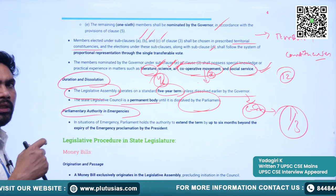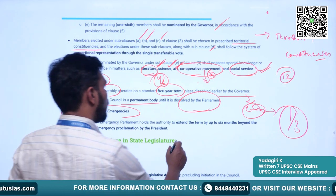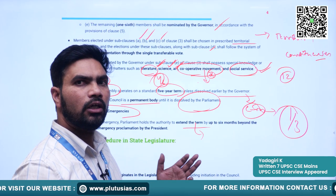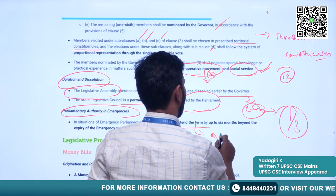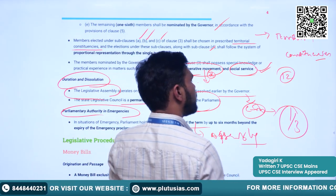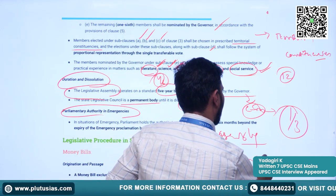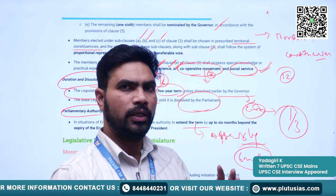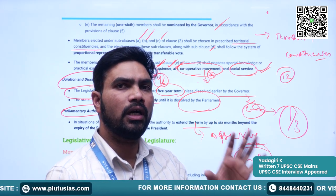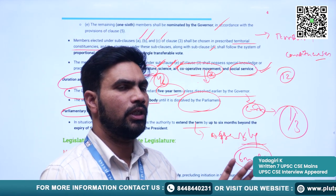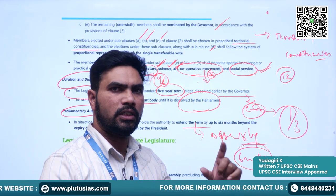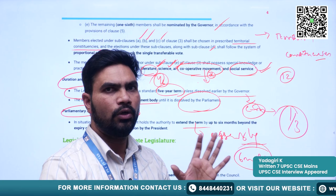During an emergency, parliament holds the authority to extend the term of the state legislative assembly. However, once the emergency ceases to exist, the tenure cannot be extended by more than six months. So once the emergency ends, the state legislative assembly must not exist for more than six months beyond its normal five-year term.